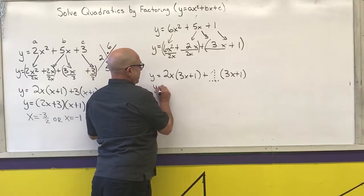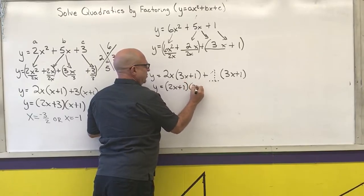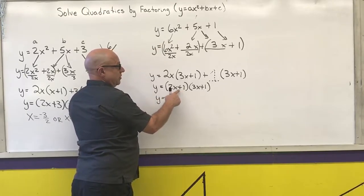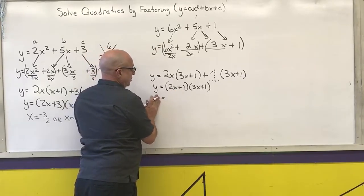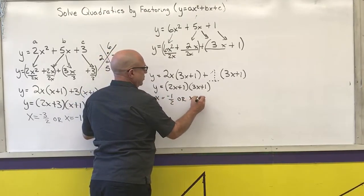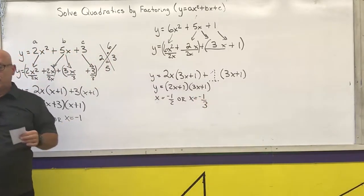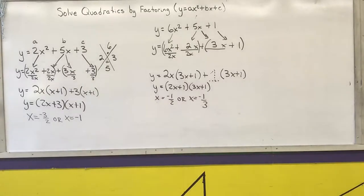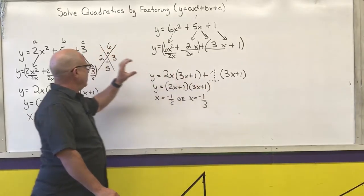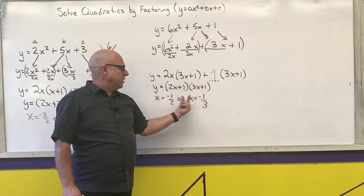So I combine and get 2x plus 1 times 3x plus 1. Shortcut to solving: change this sign, divide by that number. So x is equal to negative 1 half or x is equal to negative 1 third. Make sure you do the setup, and the reason I did this example — even though the middle numbers were the same — was to show you that the 1 is important there.